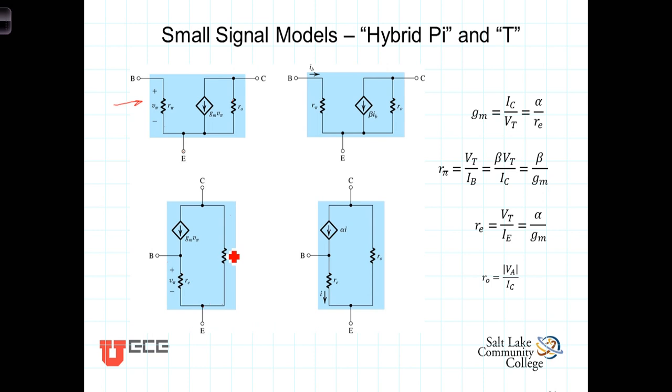Sometimes we'll take this R0 into account, sometimes we won't. It has to do with the early effect. And the other form of it is just alpha times I, where I is the current in the emitter. So the collector current would be alpha times that.